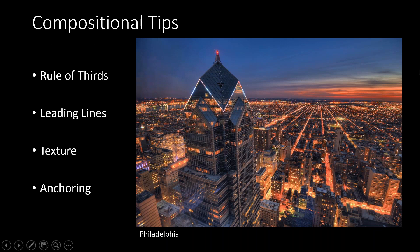As with any image, the basic compositional tips apply — the rule of thirds states you want your main subject off center, giving yourself breathing room on all sides. Here I have sky in the upper third and the tower in the first third, creating balance. I'm always looking for leading lines from traffic, and lots of texture between buildings and streets. Anchoring is usually a foreground subject that grounds the landscape.